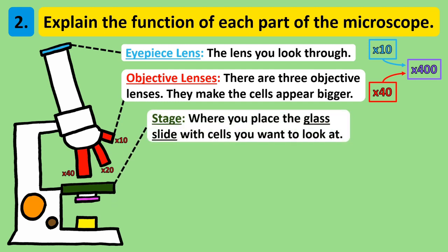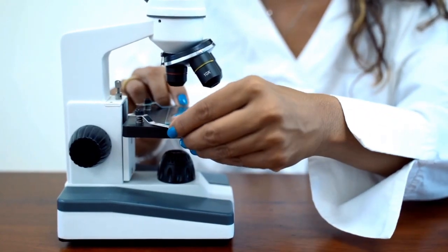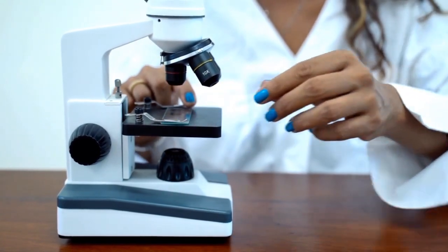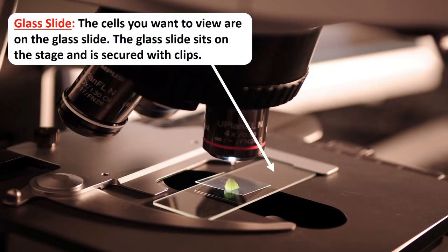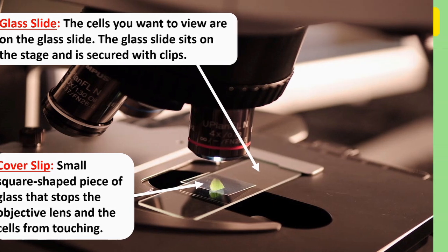The stage of the microscope is the platform where you put the cells you're looking at, and they sit on a piece of glass called a glass slide. As you can see, the glass slide is kept secure on the stage with two metal clips. Also, a very small, flimsy, square-shaped piece of glass called a cover slip is placed over the cells, and this stops the cells and objective lens from touching, and so the cover slip protects the microscope.